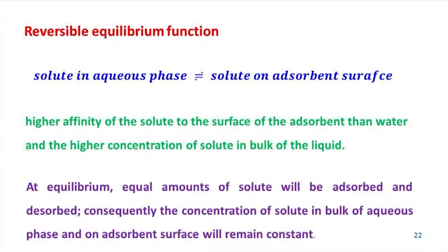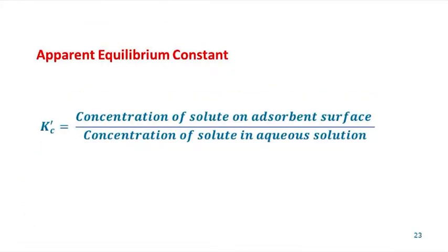Solute molecules will be transferred between the interface of the adsorbent and the bulk of the liquid until an equilibrium is attained. At equilibrium, equal amounts of solute will be adsorbed and desorbed; consequently, the concentration of solute in the bulk aqueous phase and on the adsorbent surface will remain constant. The apparent equilibrium constant, denoted by Kc′, for each equilibrium concentration of solute in liquid phase is defined as the concentration of solute on the adsorbent surface divided by the concentration of solute in the liquid phase.